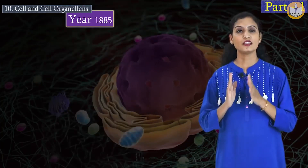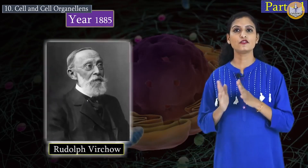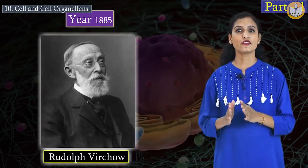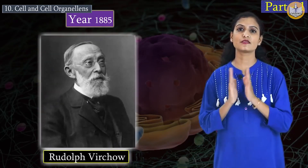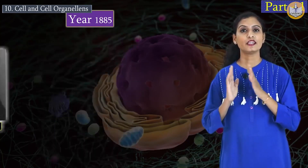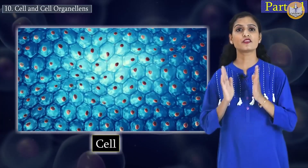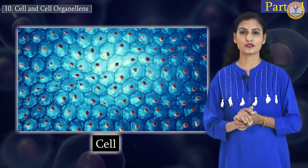In 1885, Rudolf Virchow proposed a theory that all cells are born from pre-existing cells. In living organisms, the cell is a functional and structural unit.